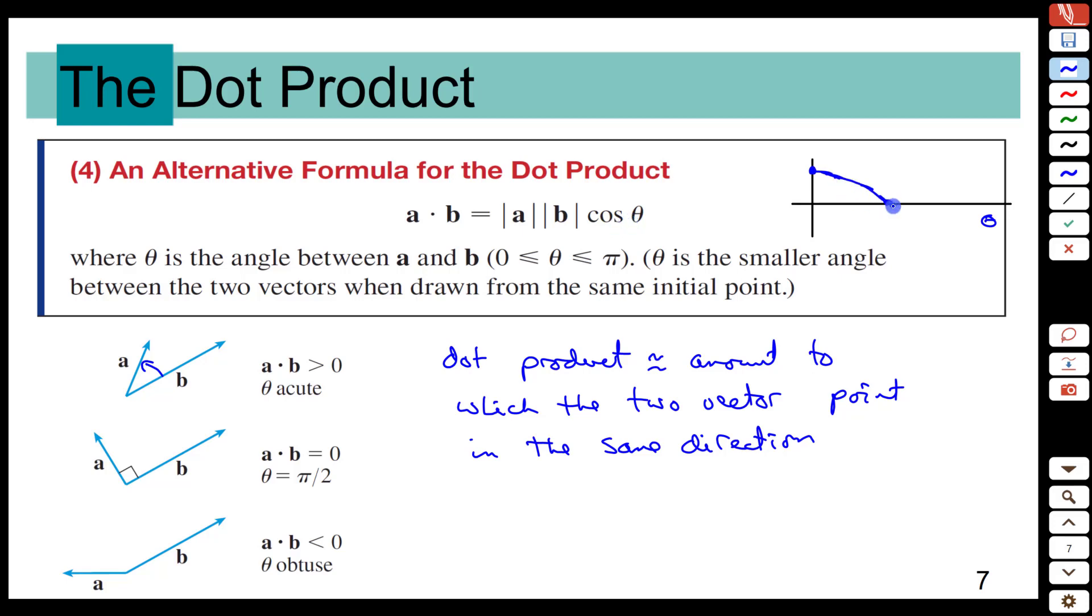Then, as the angle hits pi over two, we end up with a zero, and in that sense the a and b vectors, when they're perpendicular, point not at all in the same directions. They point in perpendicular directions. And then we get negative values when we have obtuse angles. So there is some element of the dot product representing how aligned the two vectors are, and also taking into account the vector's length as well.